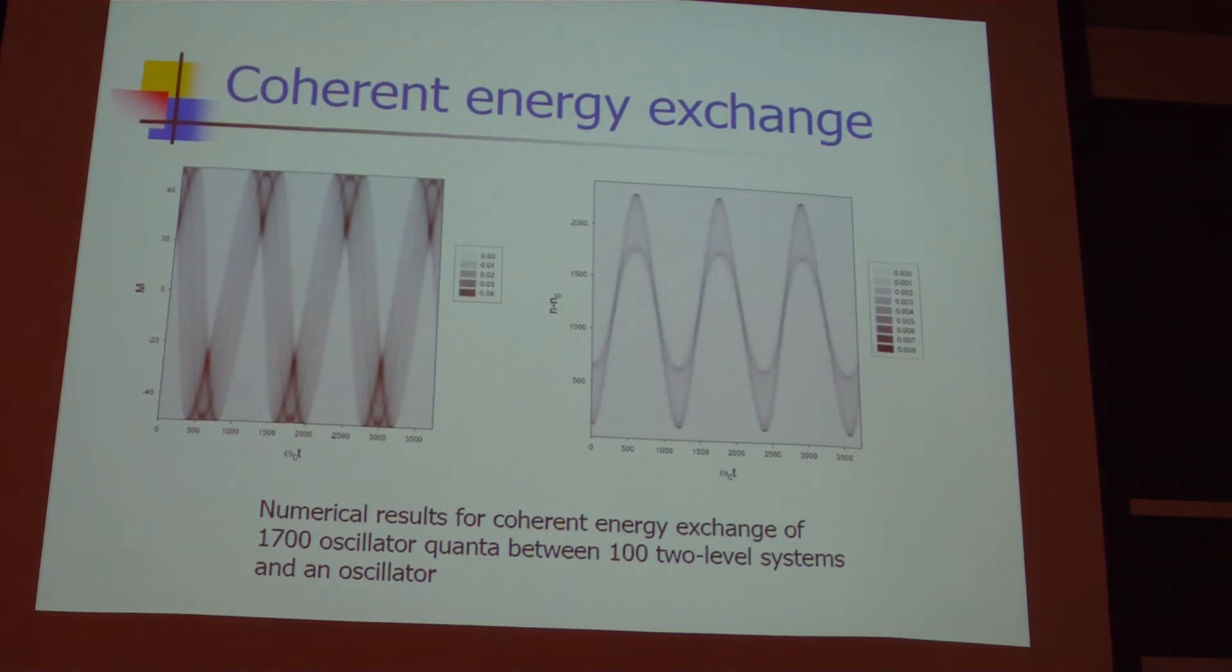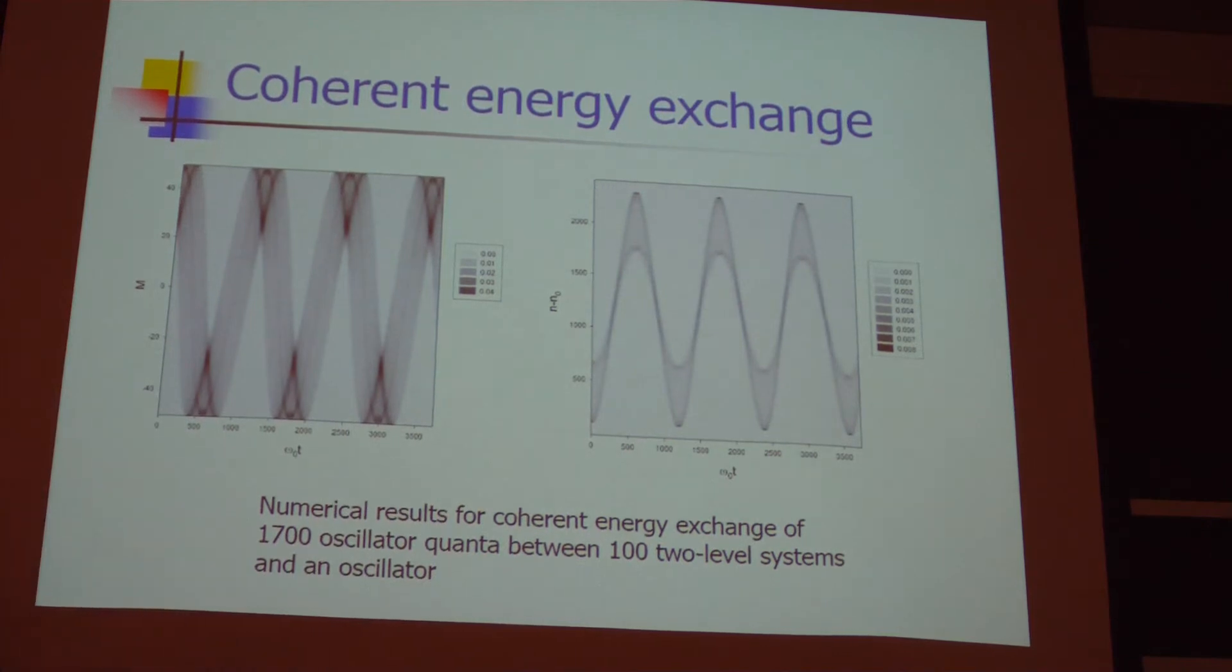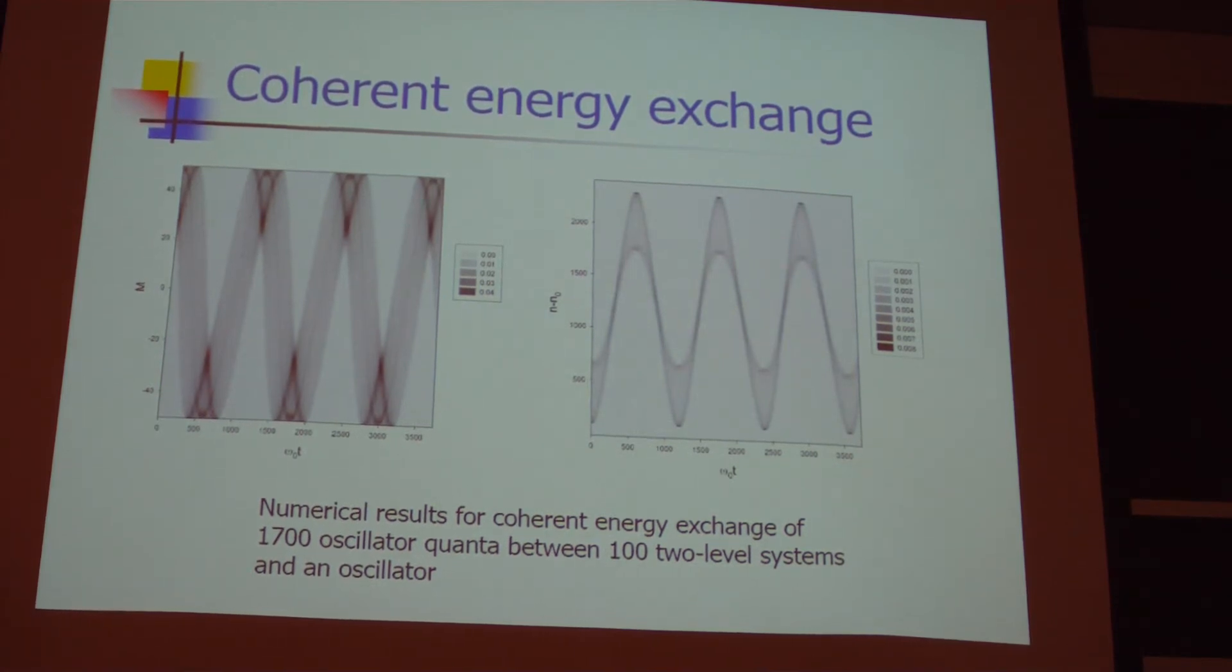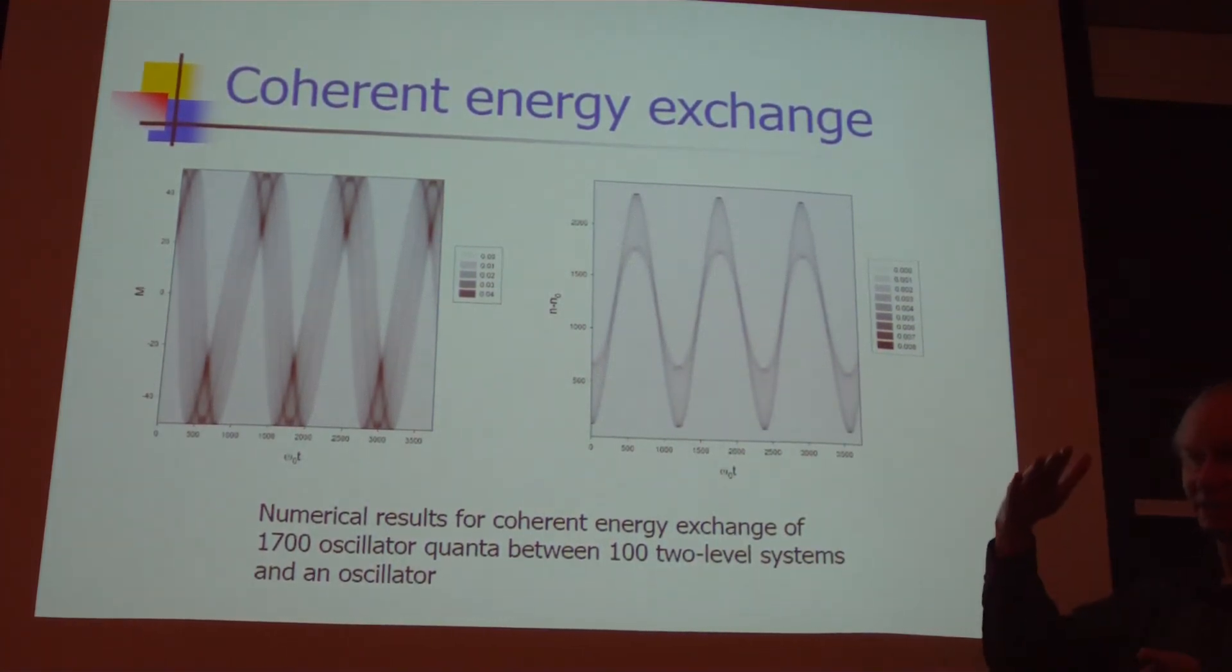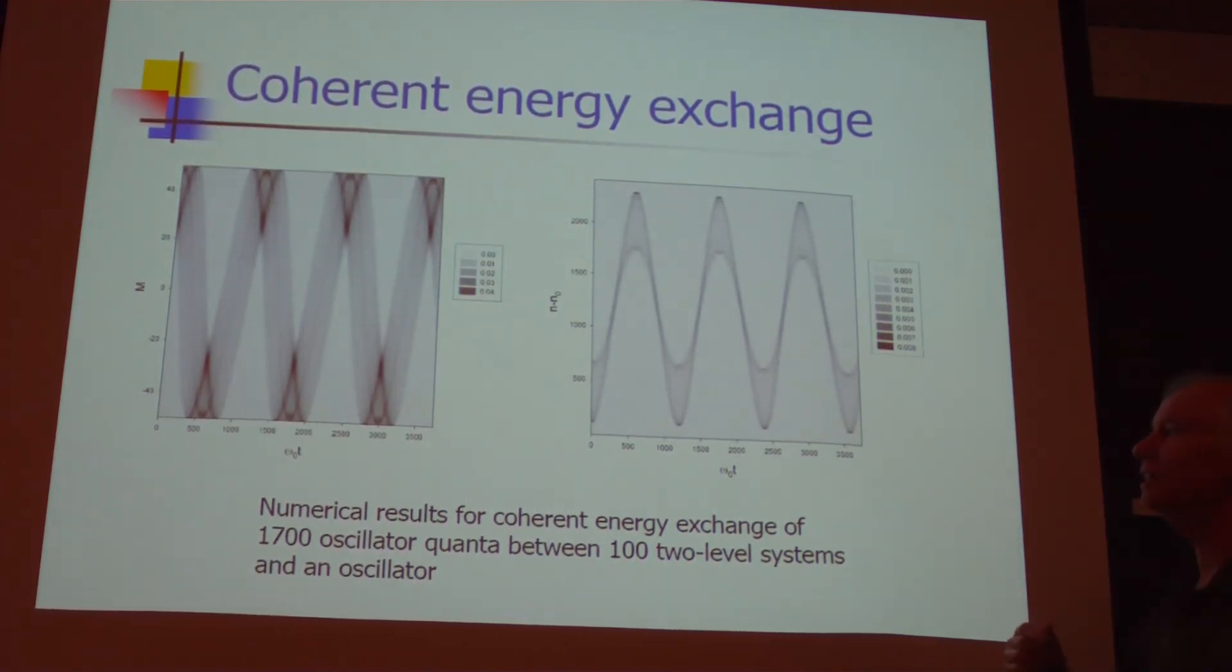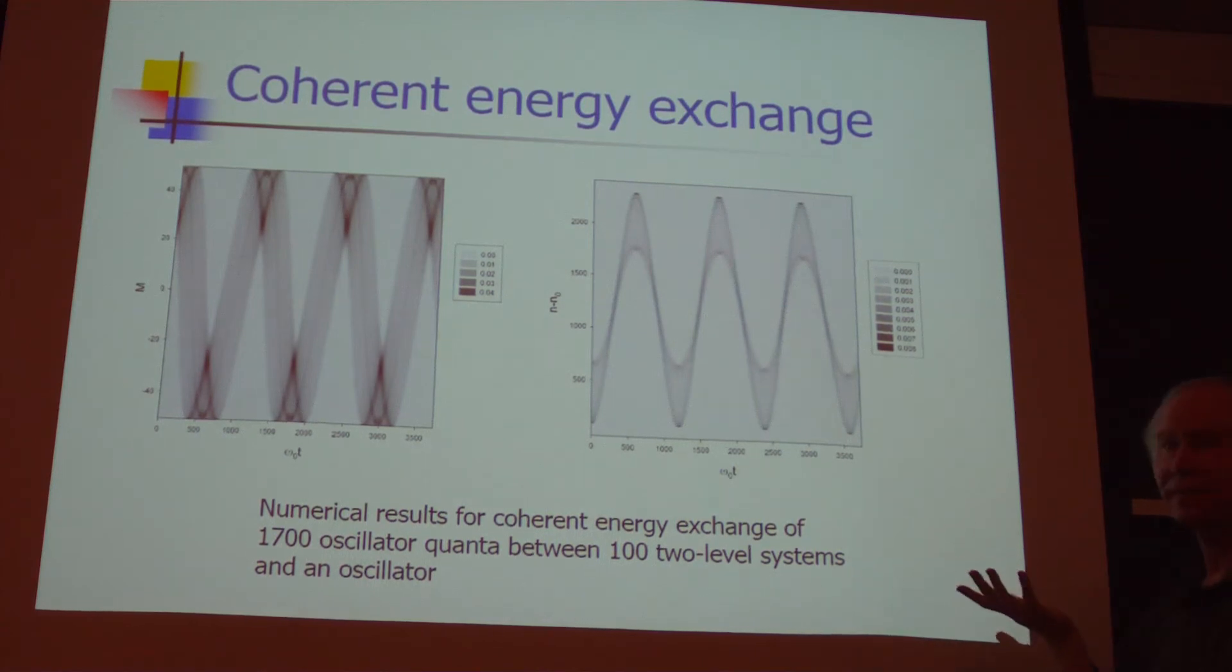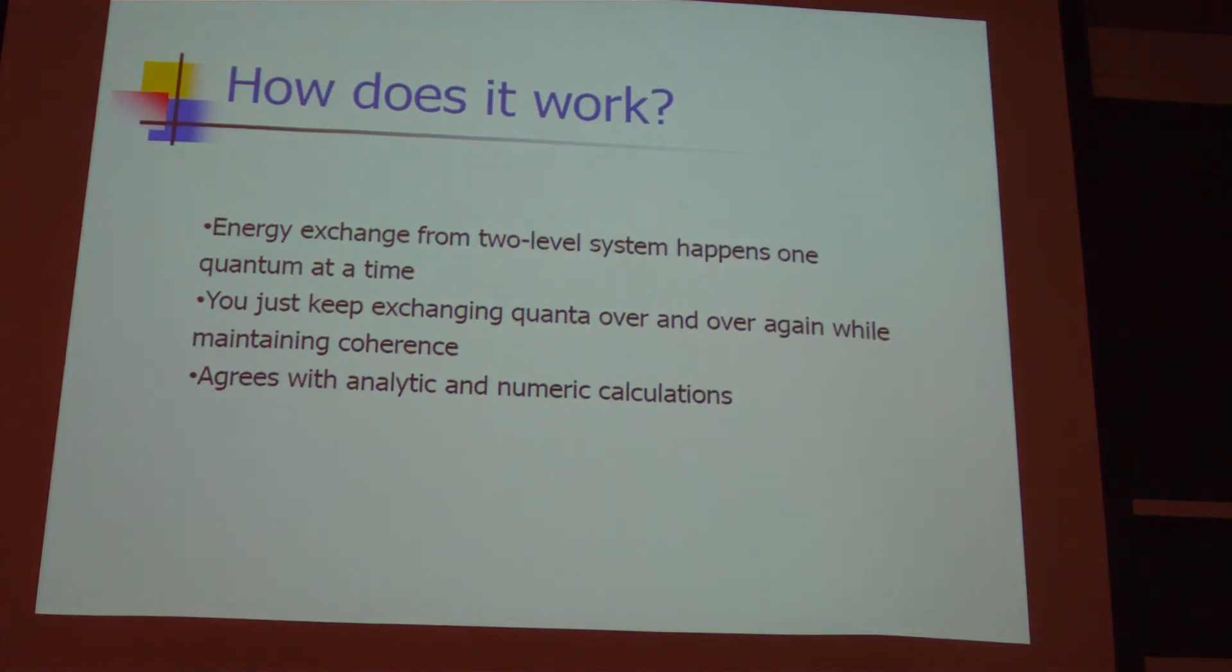Given the Hamiltonian, as we described last time, we could just solve it by brute force. We start the two-level system in the upper state. We start the oscillator with a fair amount of energy but relatively unexcited. We can calculate that the energy's going back and forth from the two-level system to the oscillator. But in this case, there's 17 oscillator quanta produced for every two-level transition. So it's in the multi-quantum regime. We've got coherent energy exchange. The time scale is really very slow on scale for how the oscillator vibrates. But this is just a straightforward brute force numerical solution showing qualitatively exactly what we're looking for.